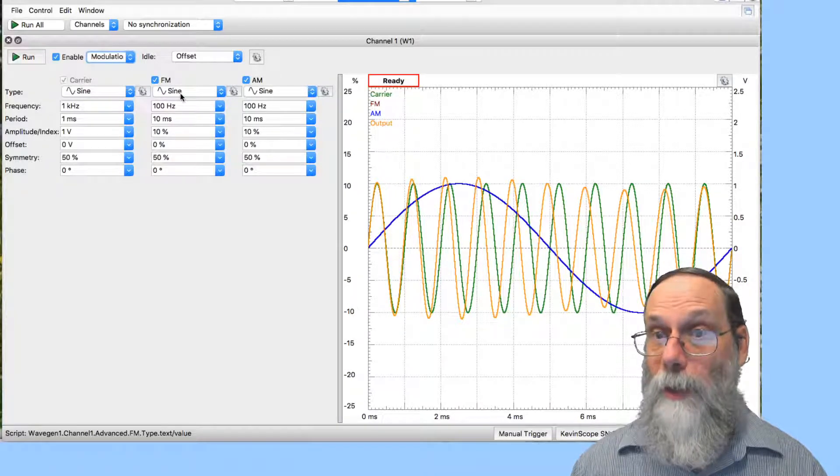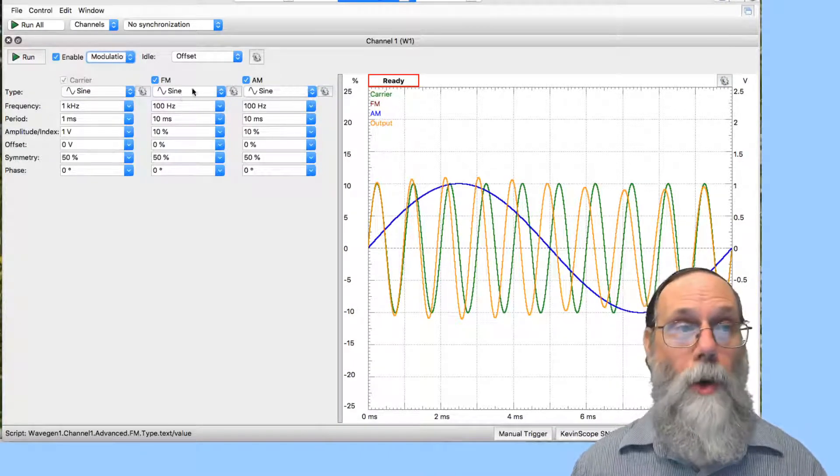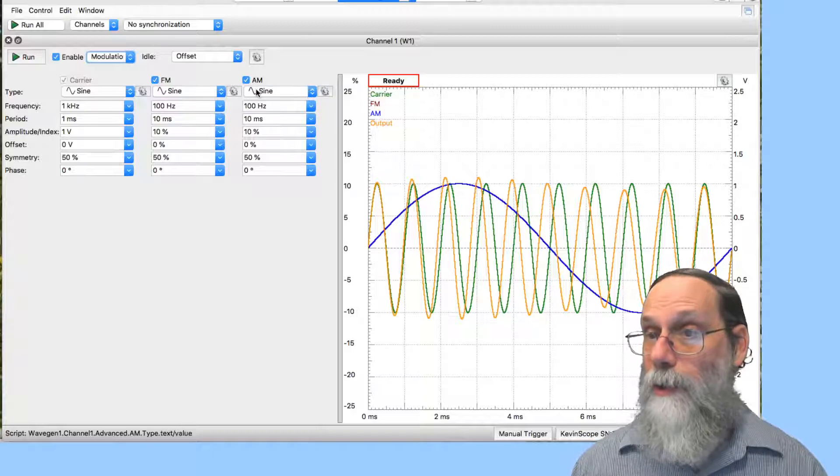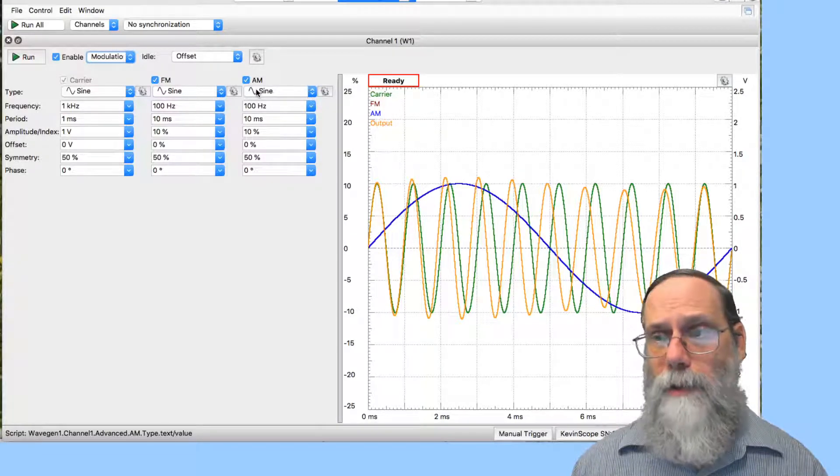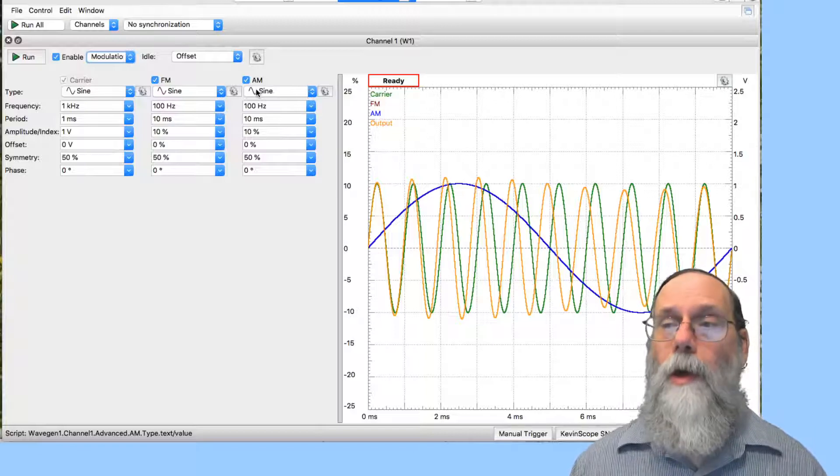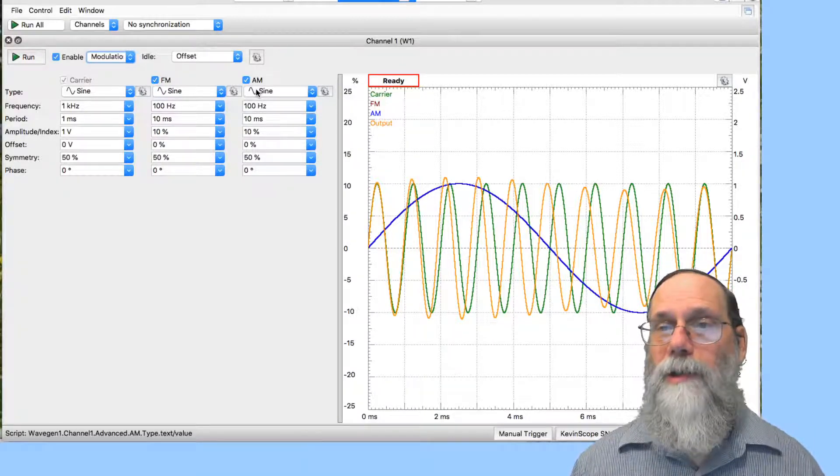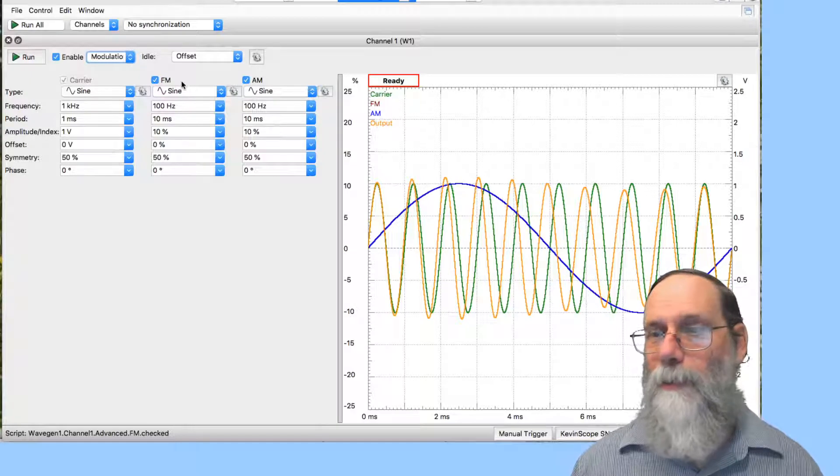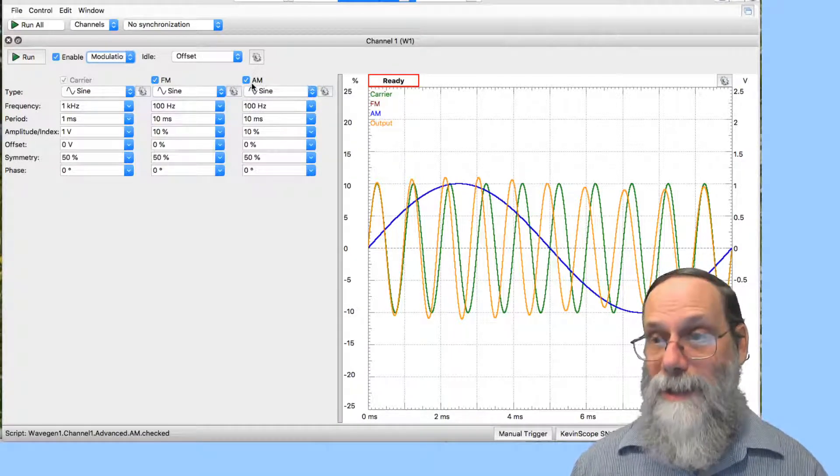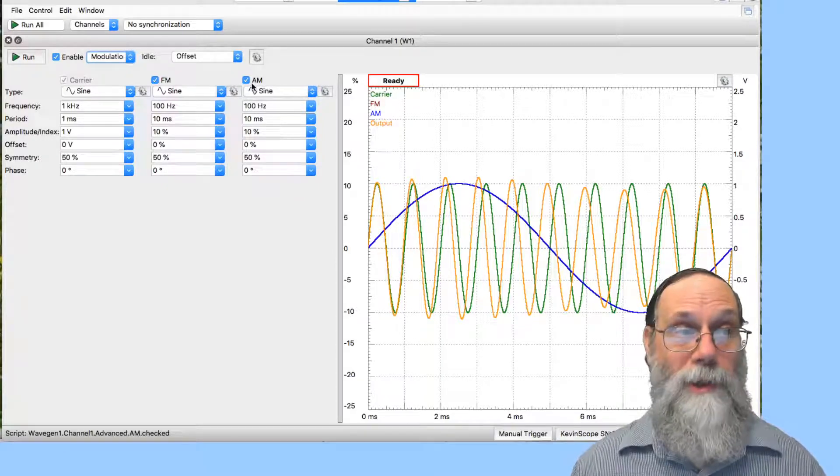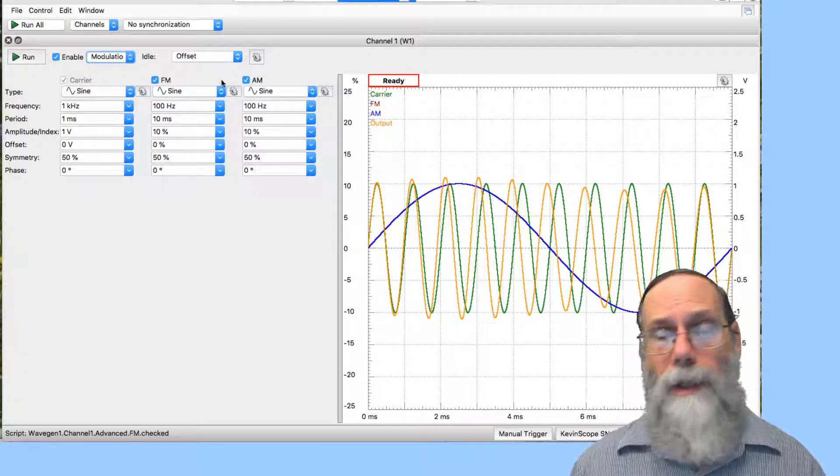There's also modulation choices, where you have the frequency changing under the control of another waveform, and that's frequency modulation, or the amplitude changing under the control of another waveform, that's amplitude modulation. And these get used a lot in traditional electronics courses, because radio communications traditionally a lot of it was done with frequency modulation and amplitude modulation, so understanding that it's nice to have a waveform generator that can actually produce it. Again, we're not going to need that for this class.